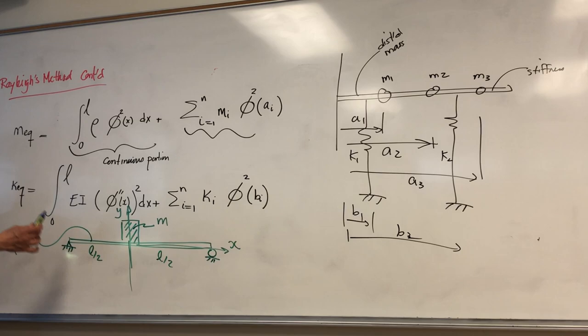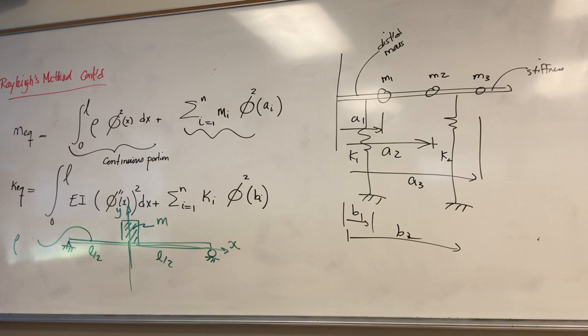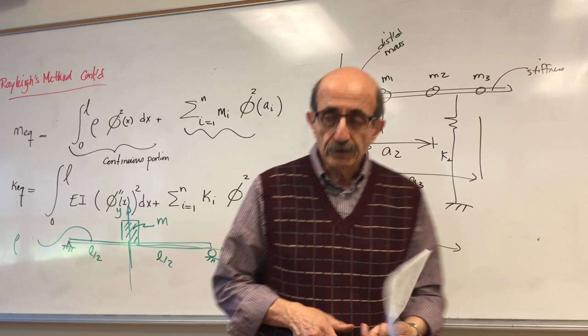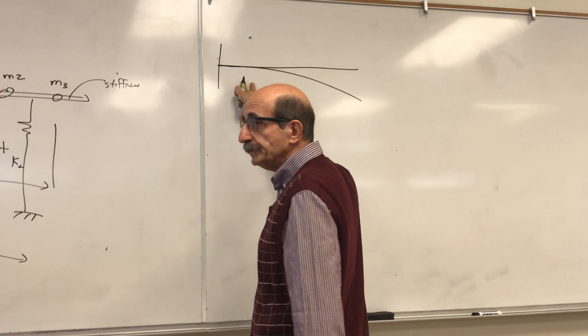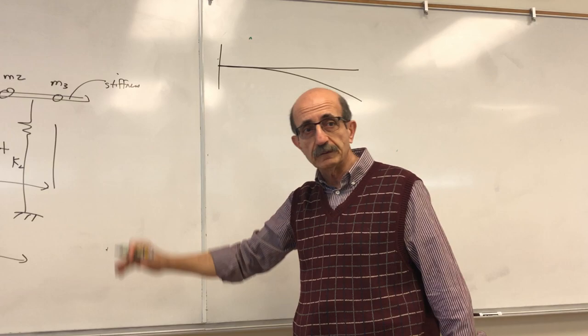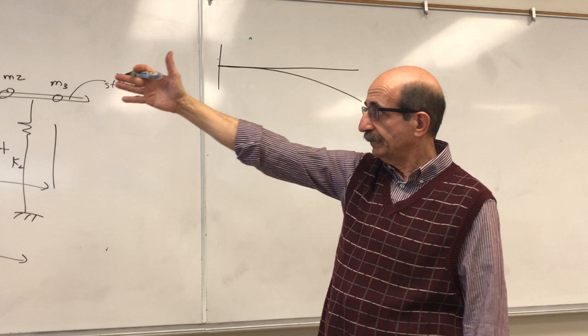This makes life easier because instead of integrating from 0 to L, we integrate from 0 to L/2 and multiply by 2. The key in Rayleigh's method is finding or choosing phi(x). This shape function comes from the analogy between the static deflected shape and the dynamic one, since the qualitative shape of the static deformation is similar to the first fundamental mode of vibration.